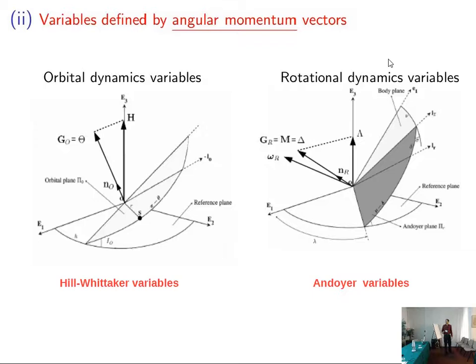But we also need to select the appropriate, if you want to build this analytical approximate model, we also need to consider appropriate sets of canonical variables in order to build these solutions. And in this study we consider the Whittaker variables for the orbital motion, and the Andoyer variables for the rotational motion.